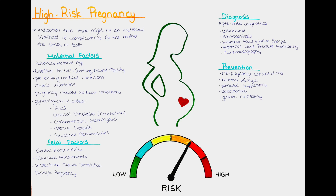How is the delivery of a high-risk pregnancy managed? The mode and the timing of the delivery in a high-risk pregnancy depend on multiple factors, including the underlying condition, the maternal and fetal well-being, and the gestational age of the baby. In some cases, an earlier delivery or cesarean section may be recommended to reduce the risks to the mother or the fetus.